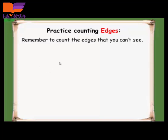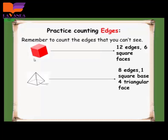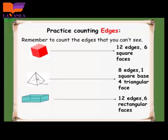Remember to count the edges that you can't see. The cube has 12 edges and 6 square faces. The square-faced pyramid has 8 edges, 1 square base, and 4 triangular faces. The rectangular prism has 12 edges and 6 rectangular faces. So the cube and the rectangular prism are the same on edges and corners, but not the same on the shape of faces — the cube has 6 square faces and the rectangular prism has 6 rectangular faces.